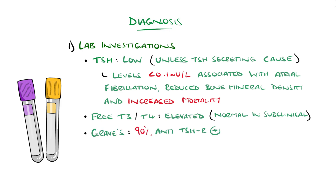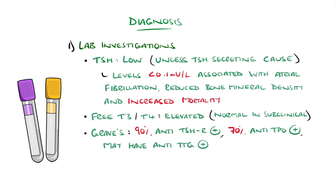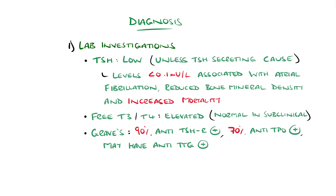Graves' disease is positive for anti-TSH receptor antibodies in around 90% of cases, and may also be positive for thyroid peroxidase antibodies, anti-TPO, seen in 70% of cases, or thyroglobulin antibodies, anti-TG, though generally these two are not involved in the pathophysiology of Graves'.